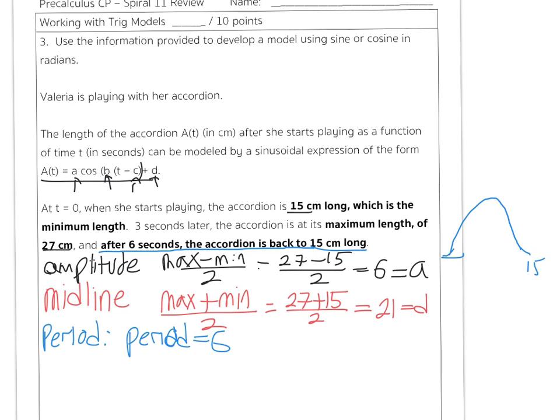We have an equation for period that says 2 pi over our b value is equal to the period. In other words, 2 pi over b is equal to 6 seconds. In solving this, I'm going to multiply both sides by b, and I get 2 pi is equal to 6b. Solving for b, I get 2 pi over 6.